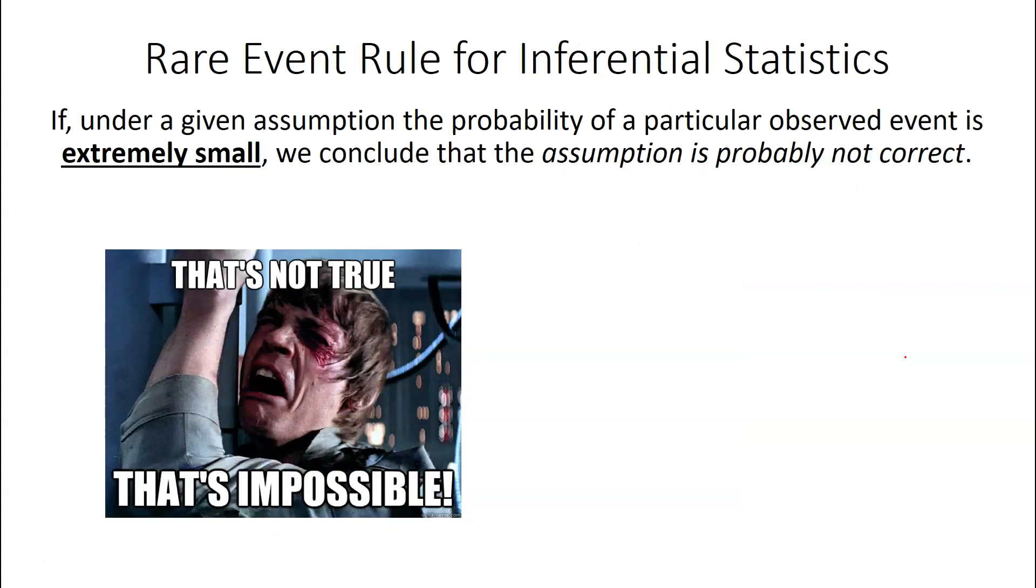In probability, we have what's called the rare event rule for inferential statistics, which says this: if under a given assumption, the probability of a particular observed event is extremely small, we conclude that the assumption is probably not correct. Now, extremely is a vague term, so it's a little bit open to interpretation. If it's extremely small, we tend to work under the assumption that it's probably not correct.